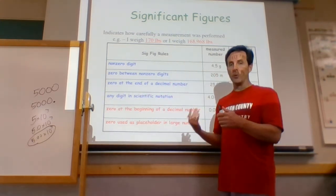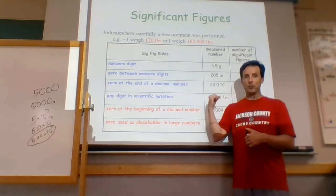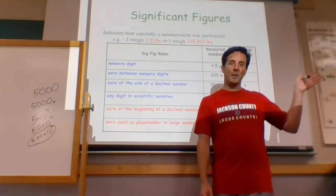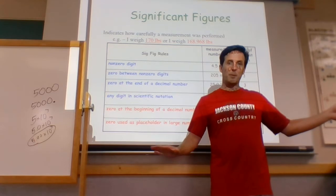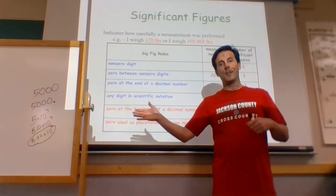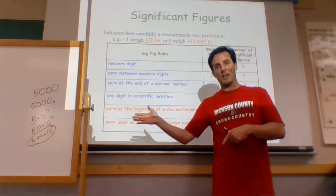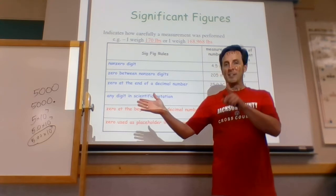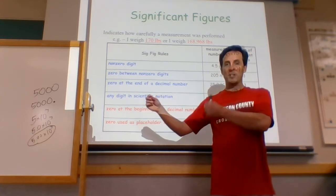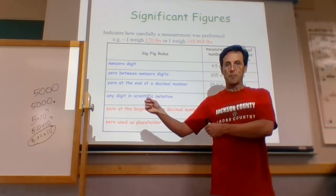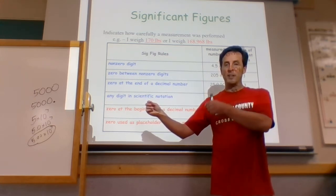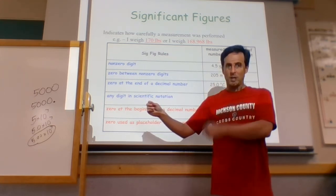So those are the rules: trapped zeros always count; zeros to the right count if there's a decimal anywhere in the number; and zeros to the left never count — meaning to the left of the first non-zero number. It's always based on the first sig fig, which is always a non-zero number.